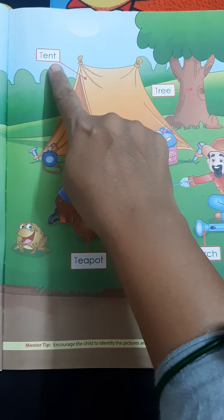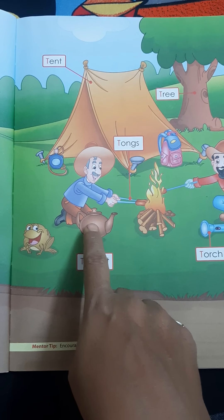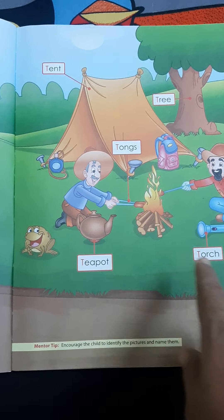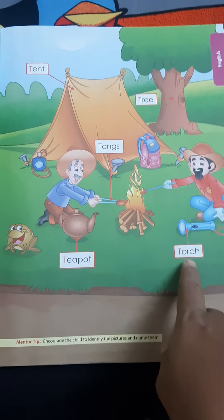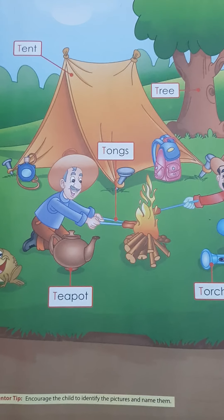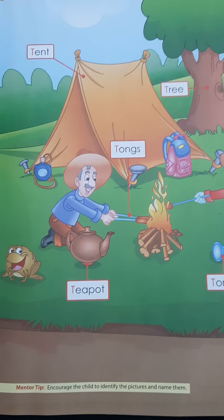This is the T-T tent. T-T tent. T-T tree. T-T tree. T-T tongs. T-T tongs. T-T teapot. T-T teapot. T-T torch.